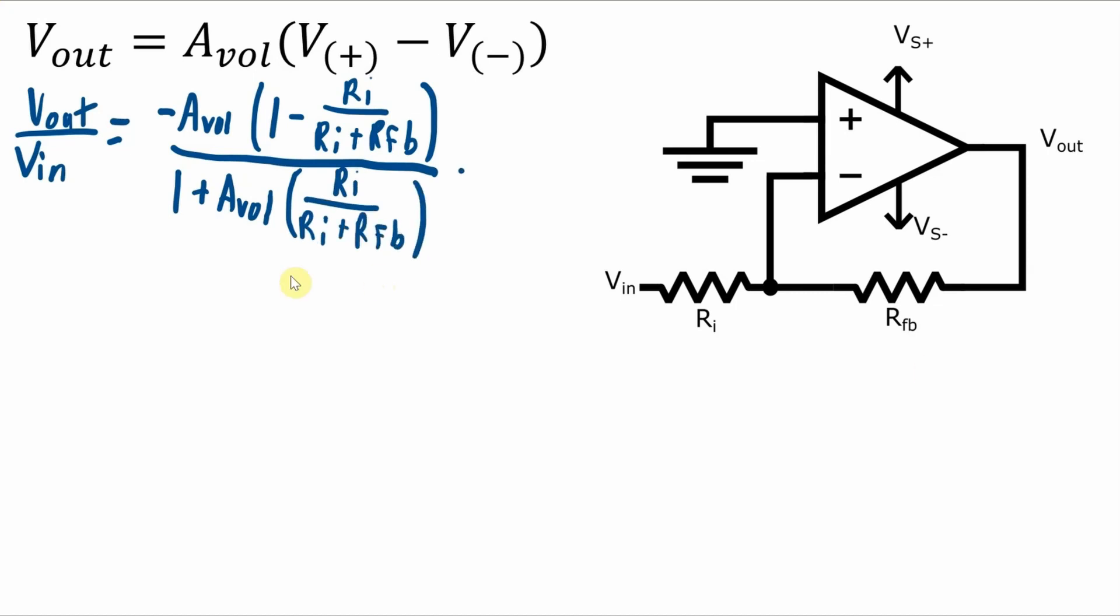And then we can get an expression that's VOUT over VIN by dividing VIN on both sides of the expression and then both sides of the expression by this term right here. Now I can multiply RI plus RFB over RI over RI plus RFB over RI.